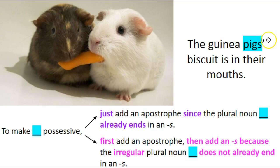Two guinea pigs, so just put the apostrophe right after the s. If you put the apostrophe before the s, that would mean that only one guinea pig has a biscuit in its mouth. To make the pigs possessive, put the apostrophe after the s.